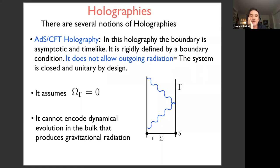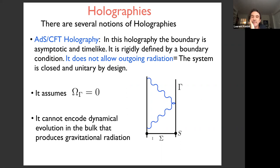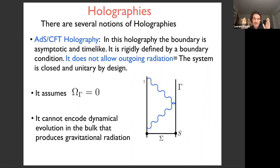There are several notions of holography in the literature. The most commonly studied is AdS/CFT holography, where the boundary is asymptotic — placed at infinity, chosen to be timelike because it's in AdS. This boundary is rigidly defined by a strong Dirichlet boundary condition, which does not allow outgoing radiation. In AdS/CFT the system is closed, and because we assume no symplectic flux on the boundary, it's also unitary by design.